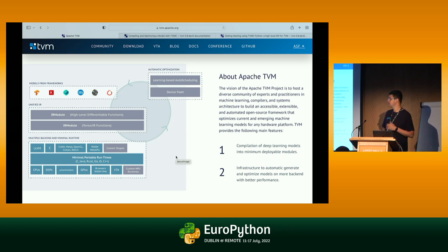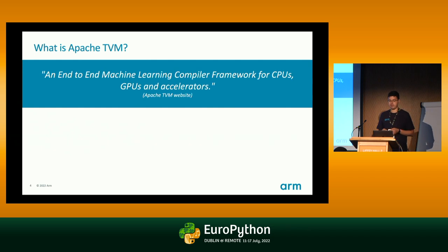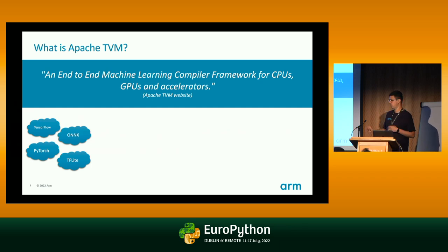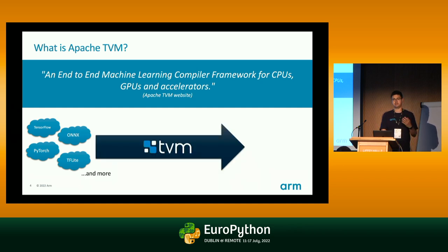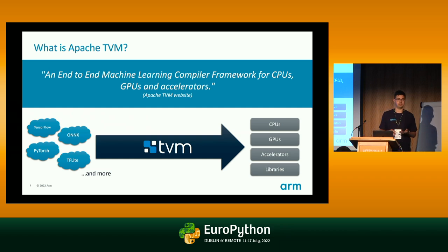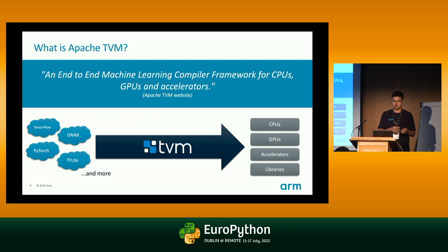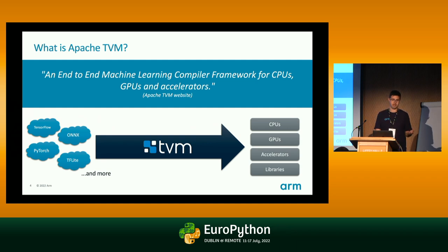Apache TVM is an open source project. It defines itself as an end-to-end machine learning compiler framework for CPUs, GPUs, and accelerators. Concretely, if you have a model in one of those formats — TensorFlow, PyTorch, TF Lite — you will use TVM to target those models to run on your CPUs, GPUs, accelerators, and libraries. You get a mix of which parts of your model are most suitable to run on each of those target hardware or libraries.